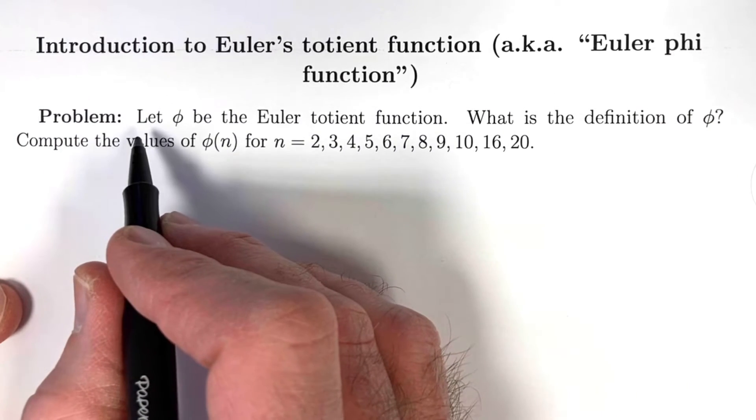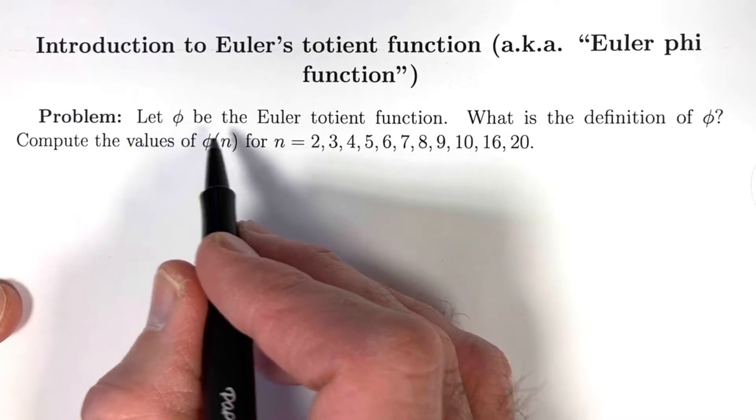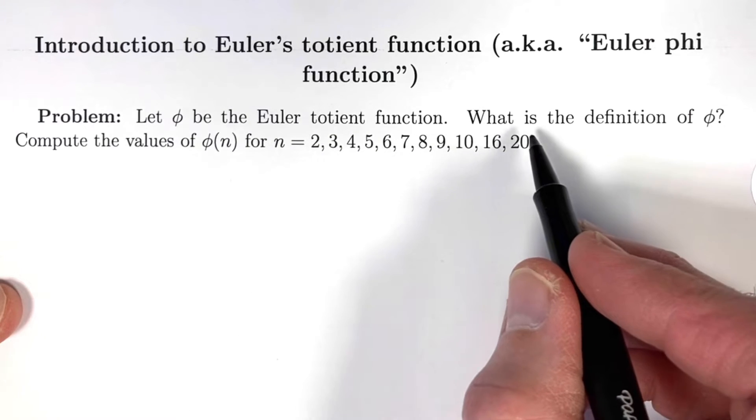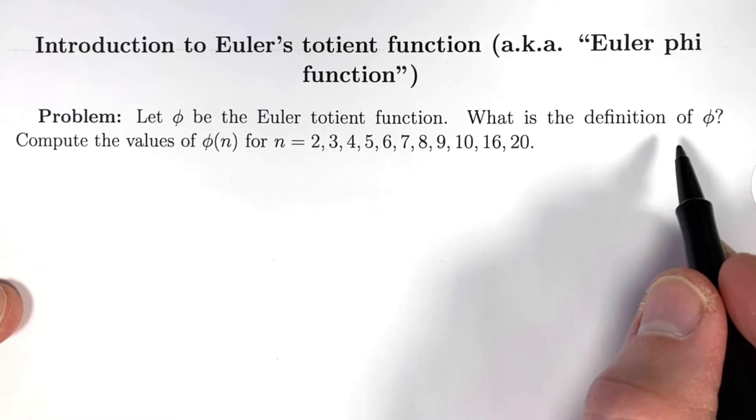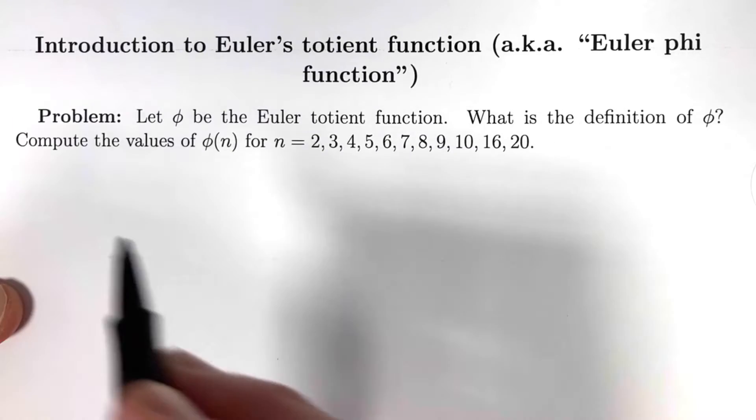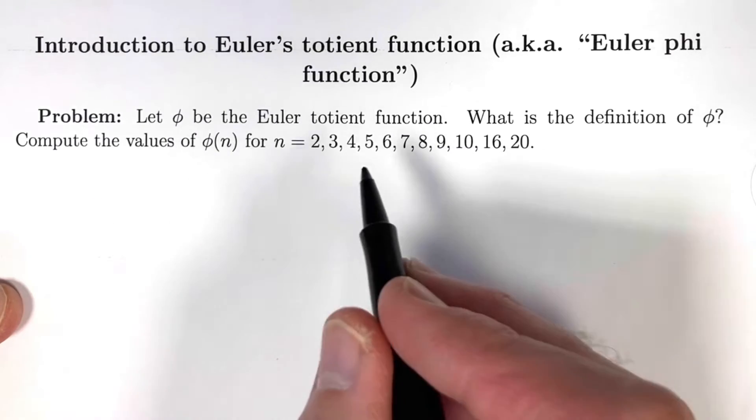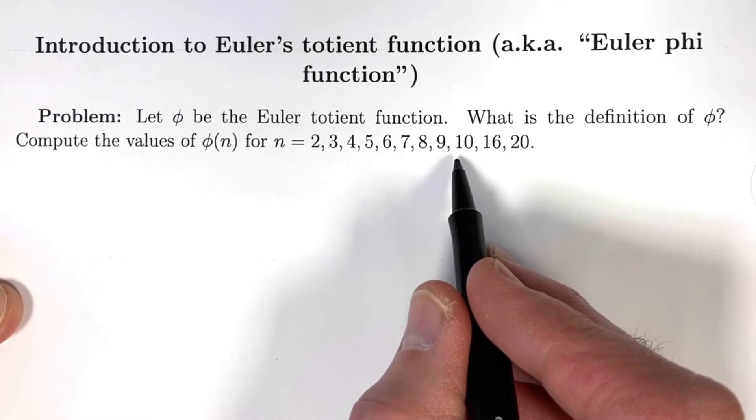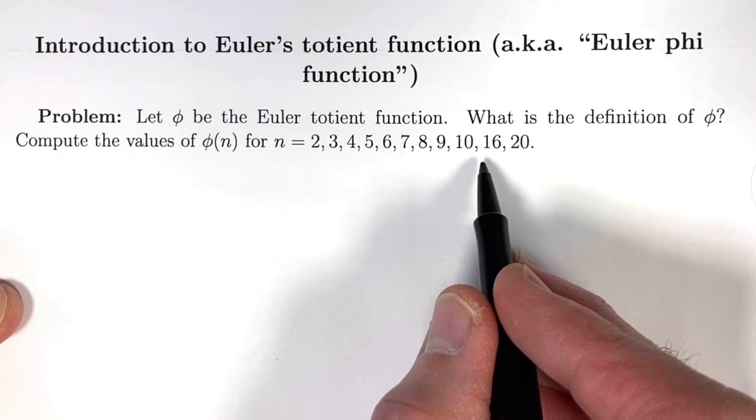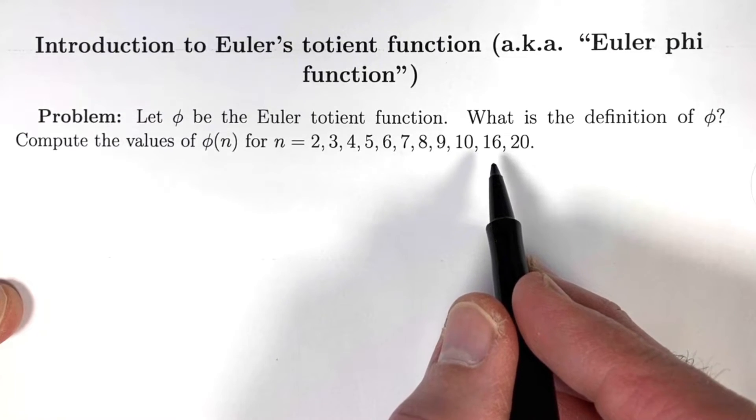The problem statement is this: let φ be the Euler totient function. First, what is the definition of φ? What does it mean? Secondly, based on that definition, compute the values of φ(n) for n = 2 through 10, and also jump ahead to n = 16 and 20 because those are more interesting.